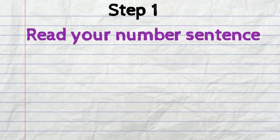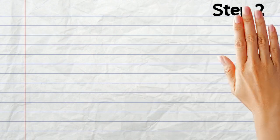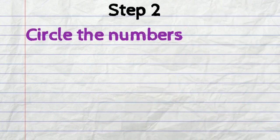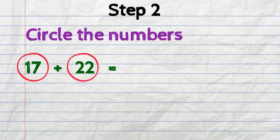So the first step is to read your number sentence. 17 plus 22 equals. The second step is to circle the numbers that you're going to add. You can see the circles here.